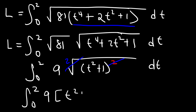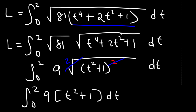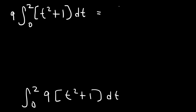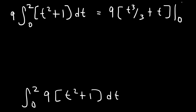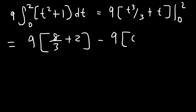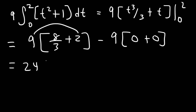And so we're going to have the integral from 0 to 2 of 9 times t squared plus 1, dt. Let's move the 9 to the front. Now we can find the antiderivative: t squared becomes t to the third divided by 3, and the antiderivative of 1 is t. Evaluated from 0 to 2: plugging in 2 gives 2 to the third, which is 8, divided by 3, plus 2. Plugging in 0 gives 0. So 9 divided by 3 is 3, and 3 times 8 is 24. Then 9 times 2 is 18. And 24 plus 18 is 42. So 42 is the length of the arc.